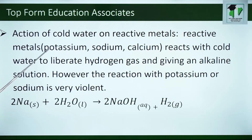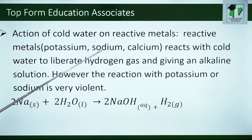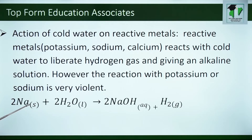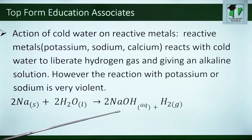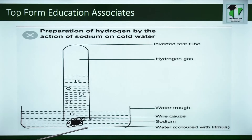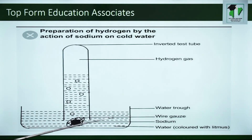Another method is by the action of cold water on reactive metals. Reactive metals like potassium, sodium and calcium react with cold water to liberate hydrogen gas and give an alkaline solution. However, the reaction with potassium or sodium is very violent. From the equation we can see two sodium atoms reacting with water to give us sodium hydroxide plus hydrogen gas. When you test this solution with litmus paper, it will show that this solution is now alkaline.